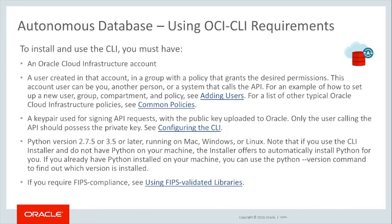This account user can be you, another person, or a system that calls the API. A key pair used for signing API requests with a public key uploaded to Oracle is required — only the user calling the API should possess the private key. Python version 2.7.5 or 3.5 or later is required, running on Mac, Windows, or Linux. Note that if you use the OCI installer and do not have Python on your machine, the installer offers to automatically install Python for you.